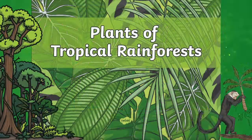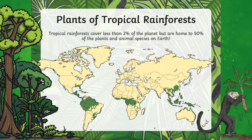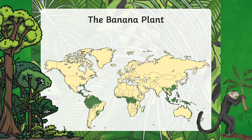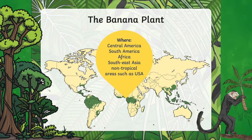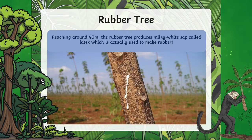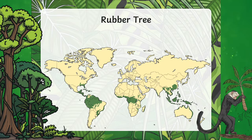Plants in the Amazon cover less than 2% of the planet but are home to 50% of the plants and animal species on Earth. Explore plants in the Amazon in your class with this detailed PowerPoint that includes lists of the types of plants found in the Amazon rainforest, as well as a list of flowers and trees that can be found in rainforest areas or biomes.